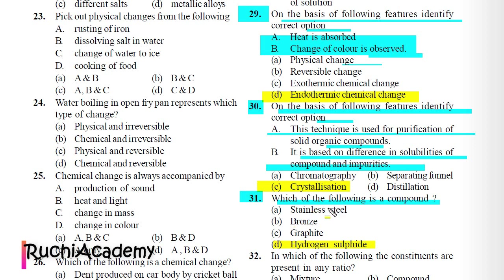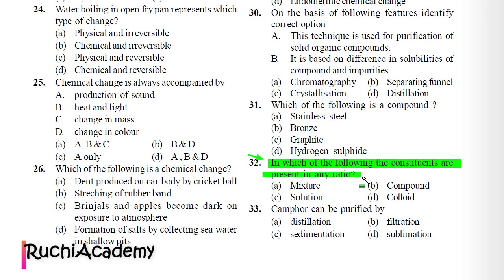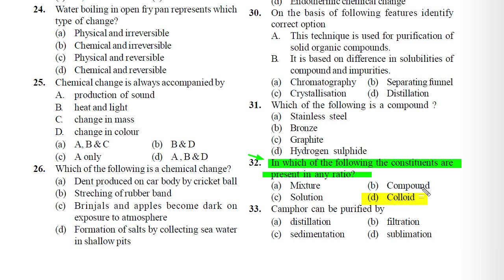Stainless steel and bronze are alloys, whereas graphite is an allotropic form of the element carbon. Question 32: In which of the following are constituents present in any ratio? A) Mixture, B) Compound, C) Solution, D) Colloid. Answer is A) Mixture, because mixtures do not have any fixed composition.